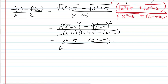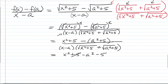Now in the numerator, I'm going to distribute the negative. So I have x squared plus 5 minus a squared minus 5. The 5's cancel.